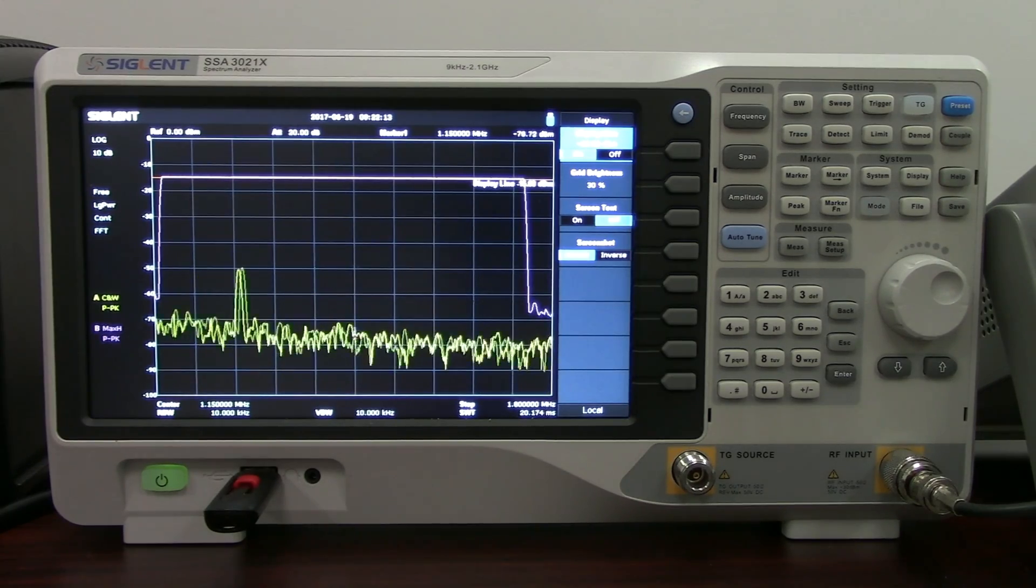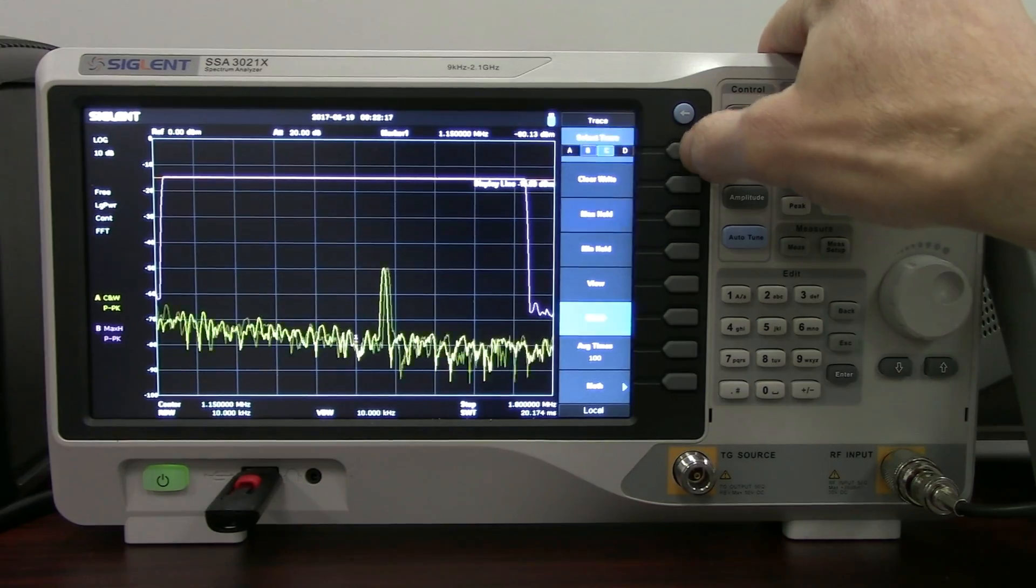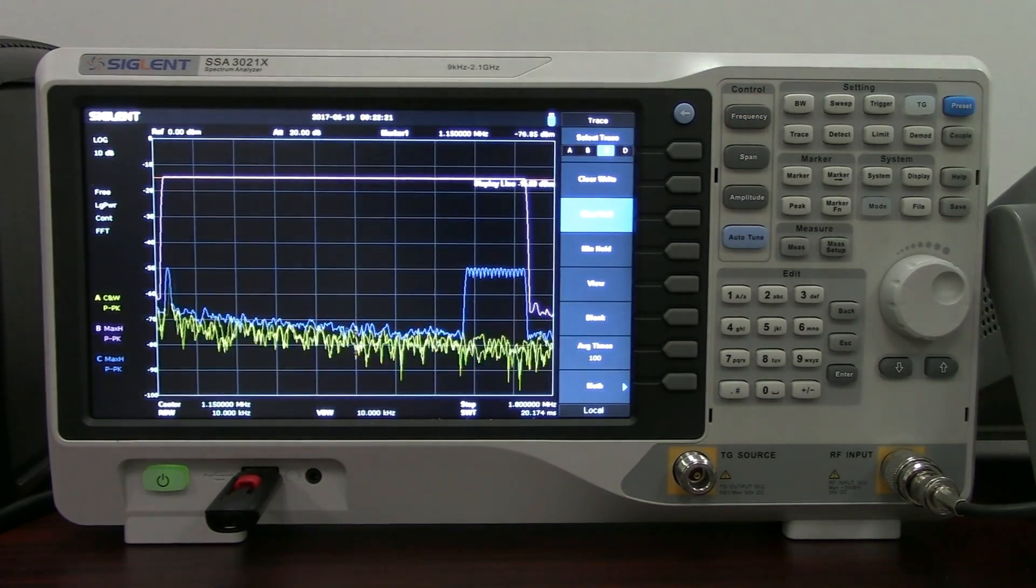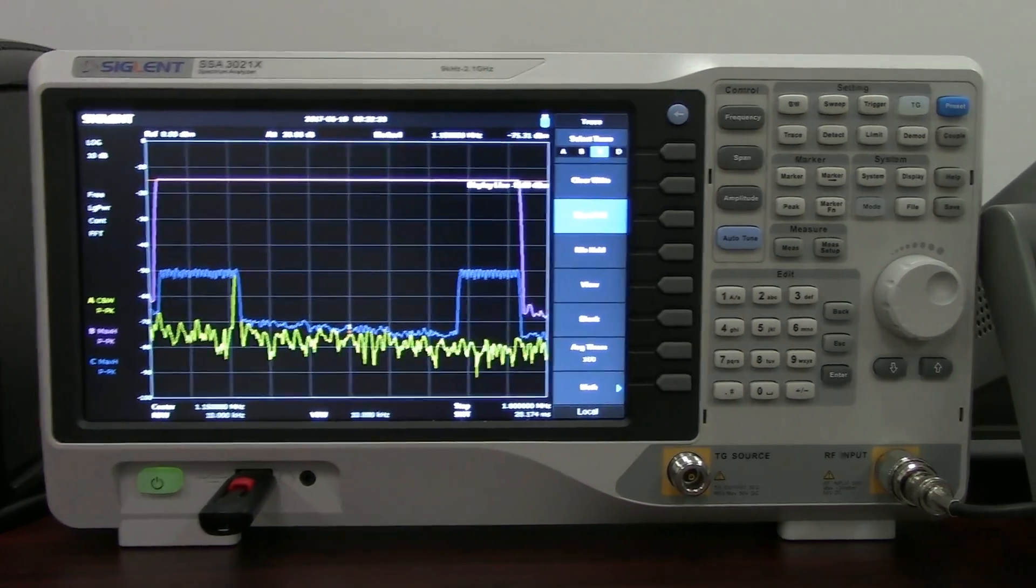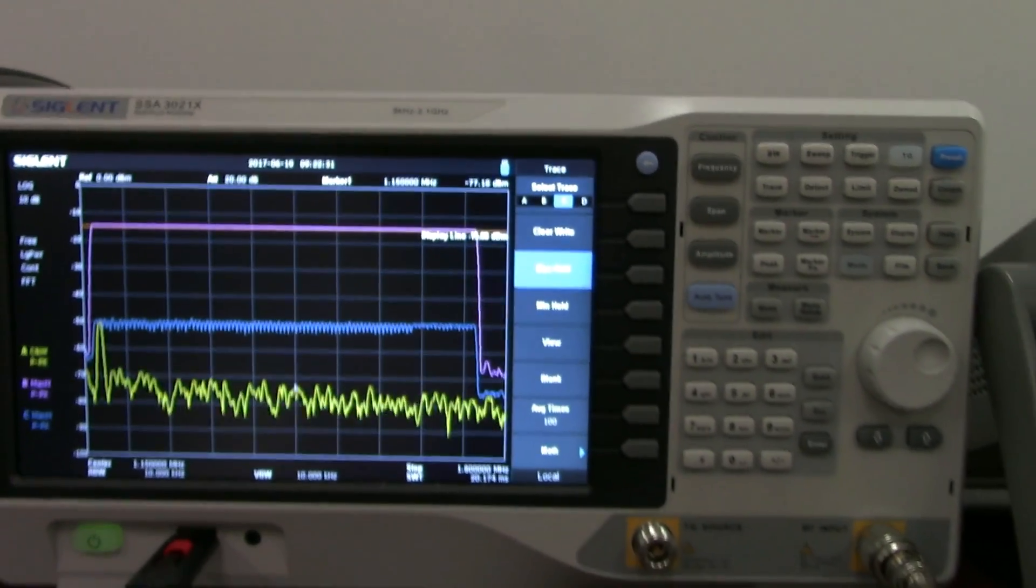And so here is our minus 15 dBm and now we'll adjust down to minus 50 and we'll enable that third trace to do a max hold as well. And now we'll trace out that minus 50 dBm sweep as before. And again here we have that minus 50 dBm and we're doing the same exact sweep.